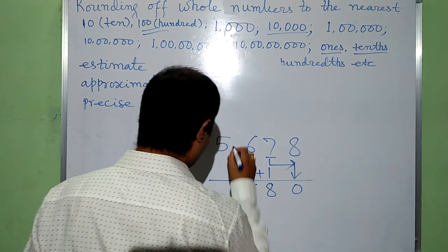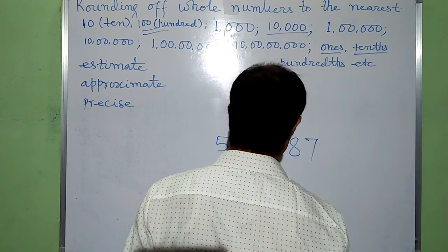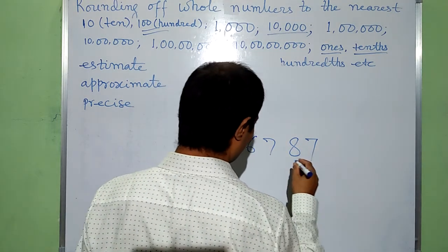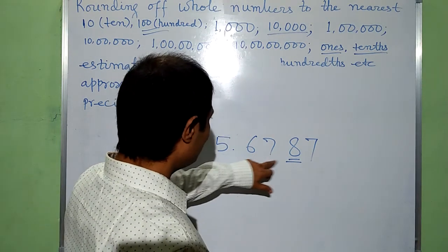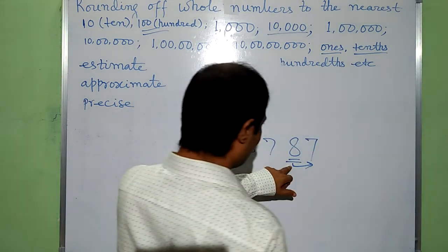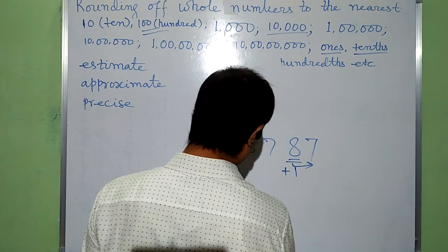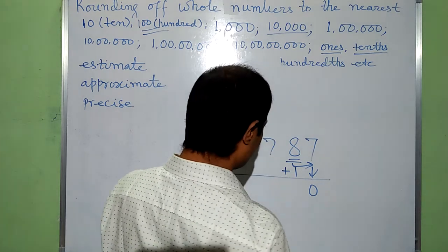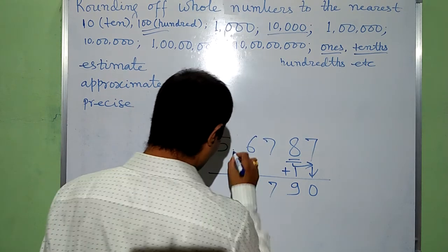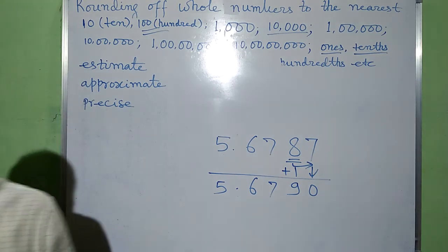For another example, we have a decimal number and need to round to the thousandths place. We look at the digit just to the right of the thousandths digit, that is 7, which is greater than 5. So we add 1: 8 plus 1 gives 9. The digit to the right is changed to 0, the decimal point remains as it is, and there is no change to the left side of the target digit. That's all — thank you very much for watching.